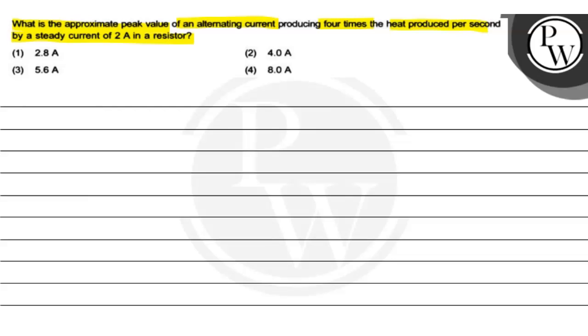For this, you need the key concept to solve this question. The key concept is you need two equations. I_rms formula is the root mean square value of alternating current.